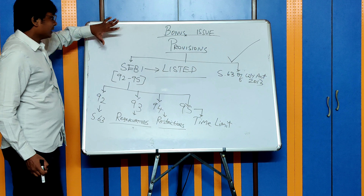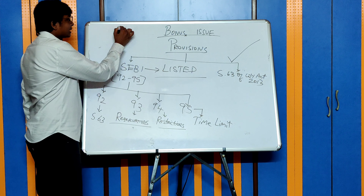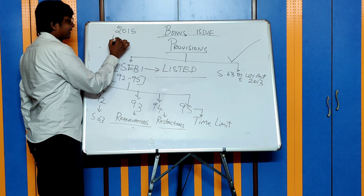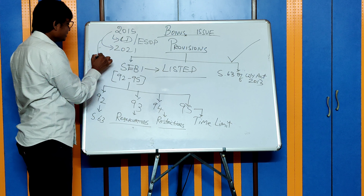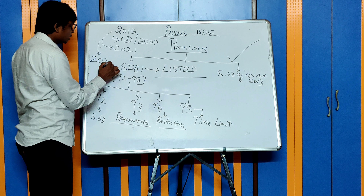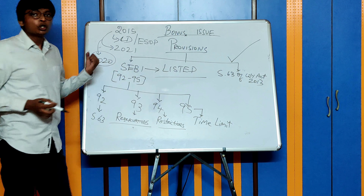Regulation 92 is similar to Section 63 of the Companies Act. Regulation 93 talks about certain reservations to issue bonus shares. Regulation 94 talks about certain restrictions to issue bonus shares. Regulation 95 talks about the time limit for issuing bonus shares. These are small concepts — let me explain them.